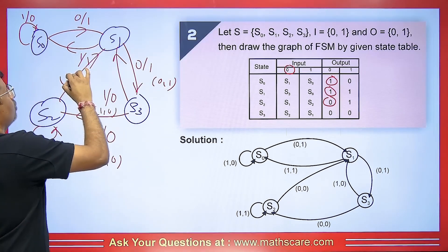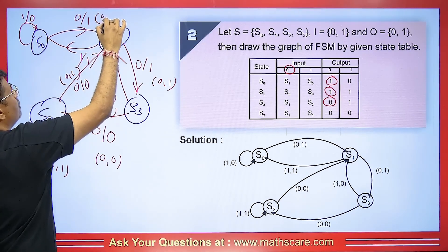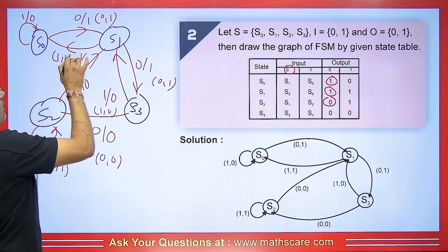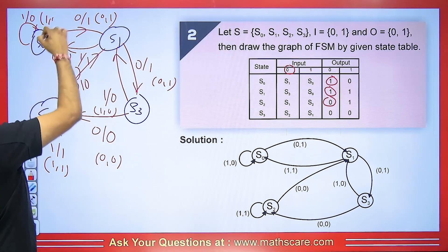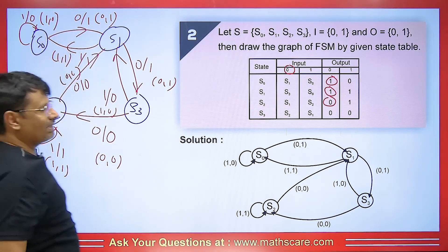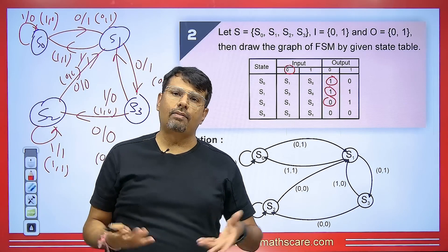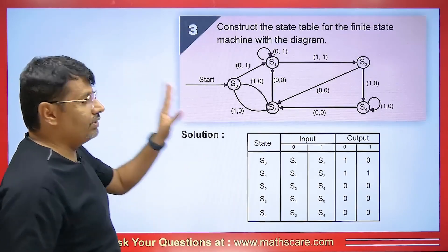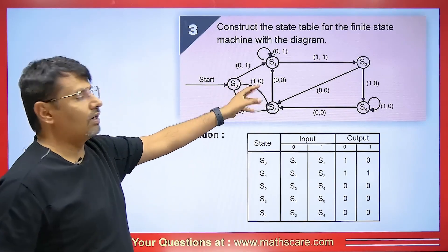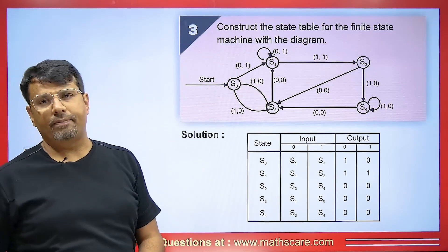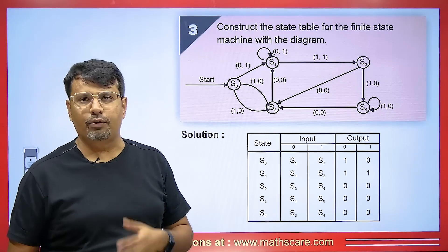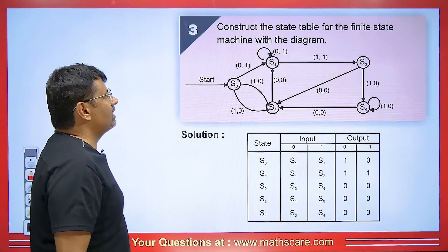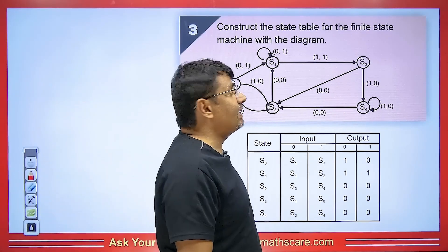You can write it as 0,1 or 1,0 — this is just a way of representation and the meaning of both is the same. In this next question, we have been given a diagram and we have to make a table. Inputs and outputs of 0 and 1 are given. Construct the state table for the finite state machine with the diagram.